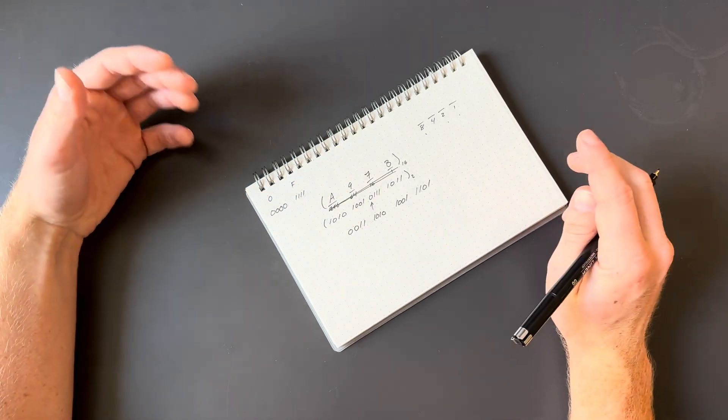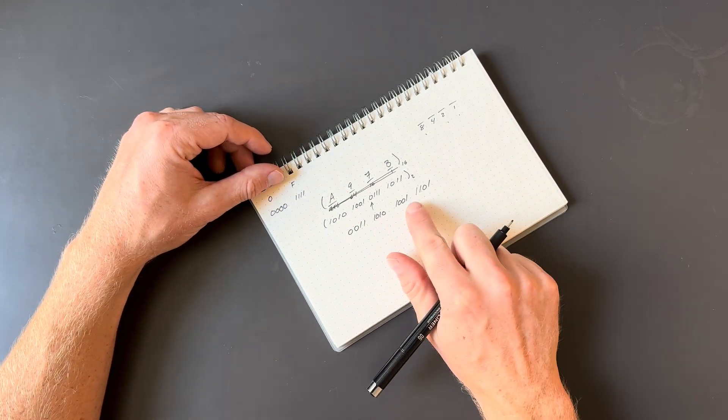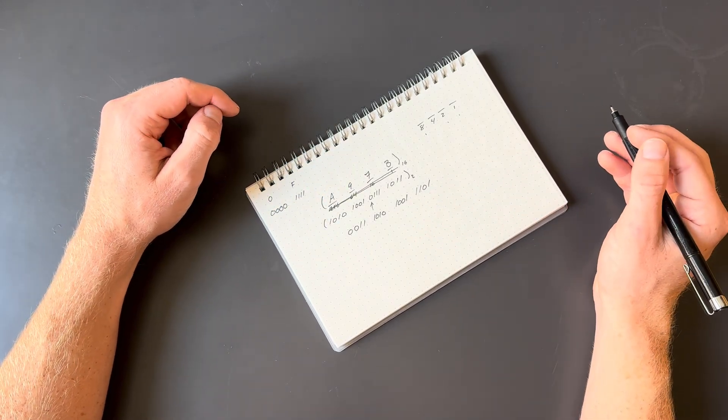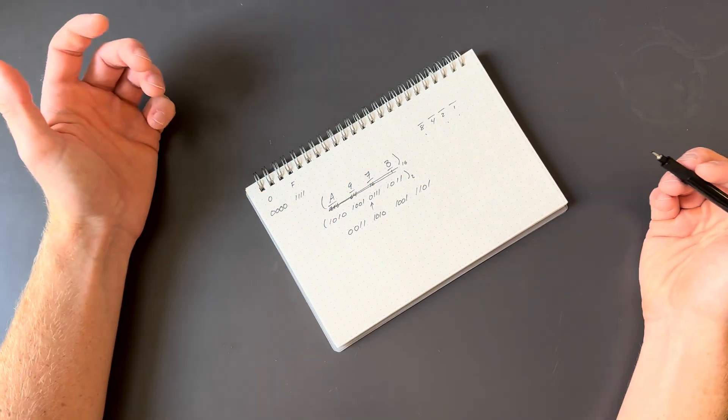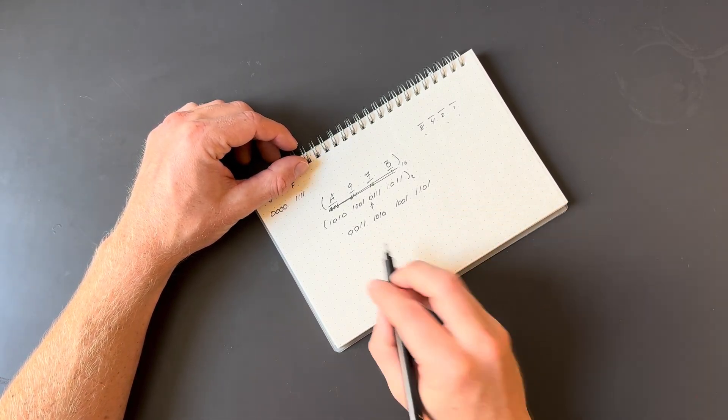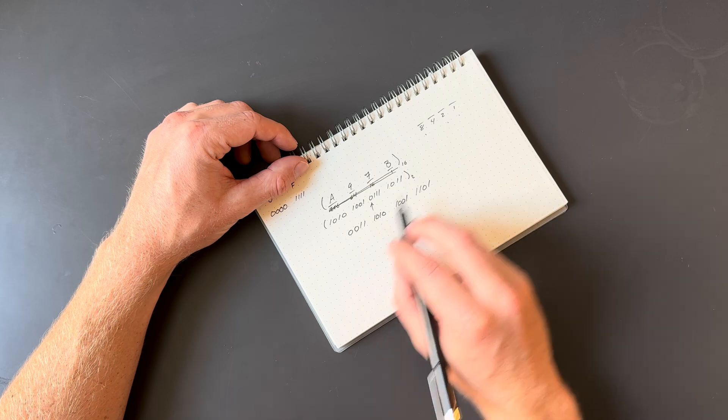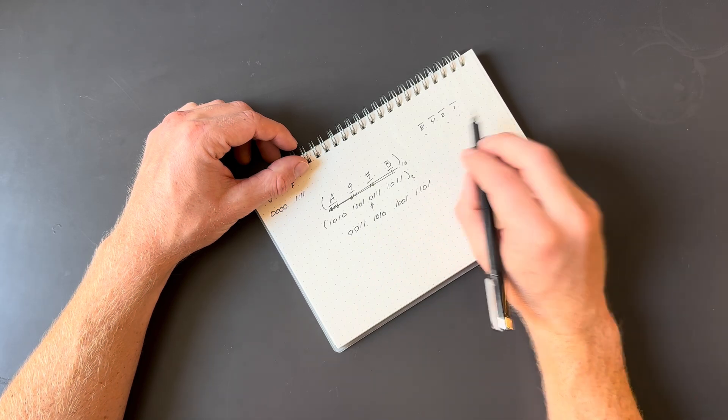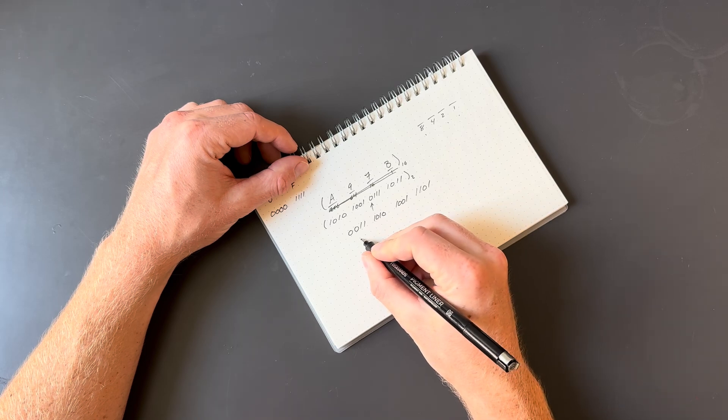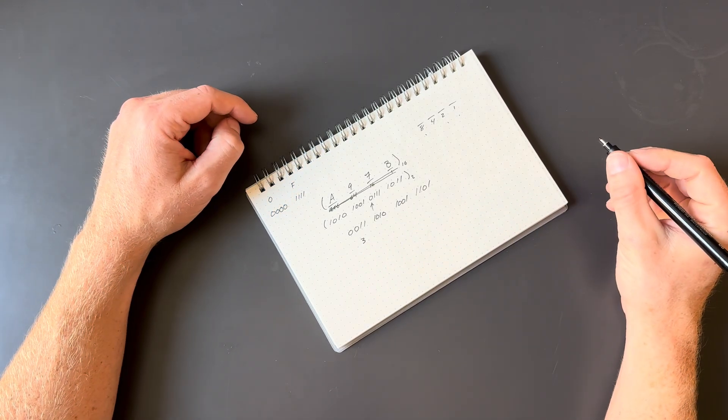Then we can carry out the same process in reverse. Each of these sets of four bits can be directly translated to a single digit of the hexadecimal system, and then those are just concatenated to make a number. So we could start at either end. It might be easy to start here. We can see we've got 0, 0, 1, 1, which means we've got the two's place and one's place occupied. So those are going to add up to a three.